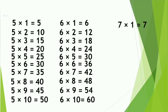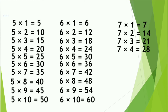7 ones are 7. 7 twos are 14. 7 threes are 21. 7 fours are 28. 7 fives are 35.